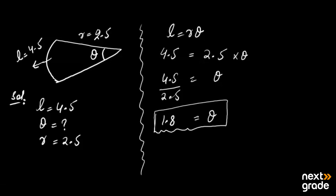We can use this formula to find out any of the three variables. If theta is unknown, we solve for theta; if R is unknown or L is unknown, we rearrange the formula accordingly. You may adjust the formula depending on which value you need to find.